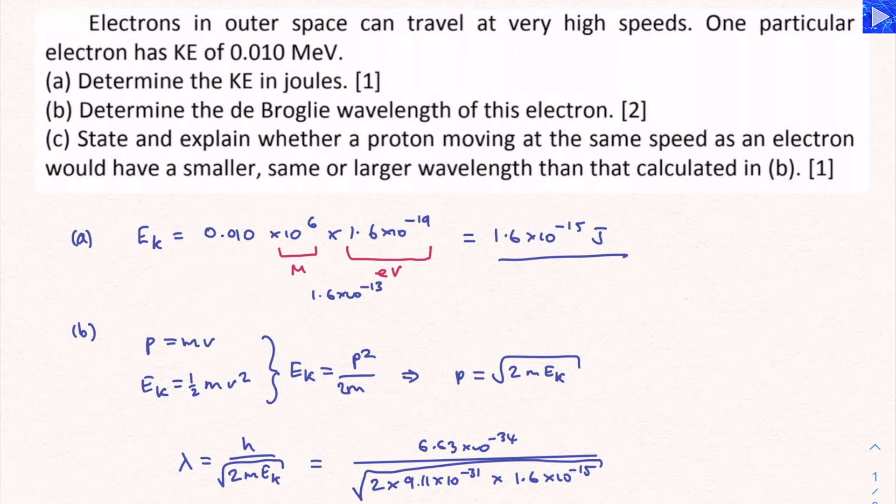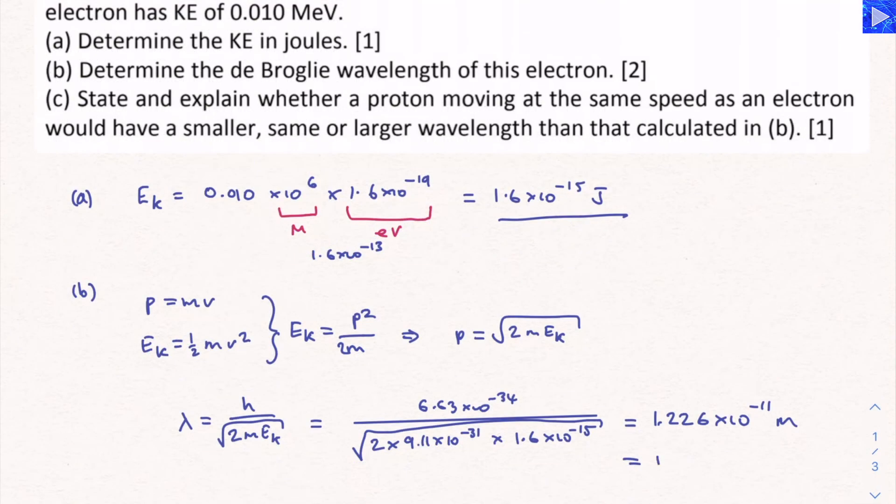Okay, so if we do this, you can see I did a stage of algebra, but now our calculation is just taking place on one line. That's 1.226 times 10 to the minus 11 meters, or 1.2 times 10 to the minus 11 meters if we put it in 2SF. So that's part B.